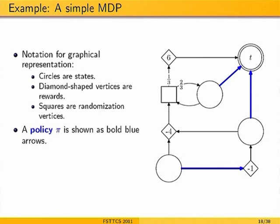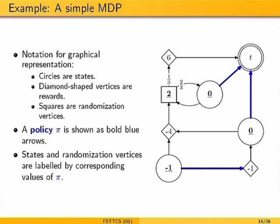A policy is a set of outgoing edges, one for every state vertex. Once you fix a policy you can compute the value of each state. For example, if from a state you go to a randomization vertex that leads to a reward of 6 with probability 1/3 and 0 otherwise, the value of that state is 2. The goal is to find the policy maximizing the sum of values of all states.